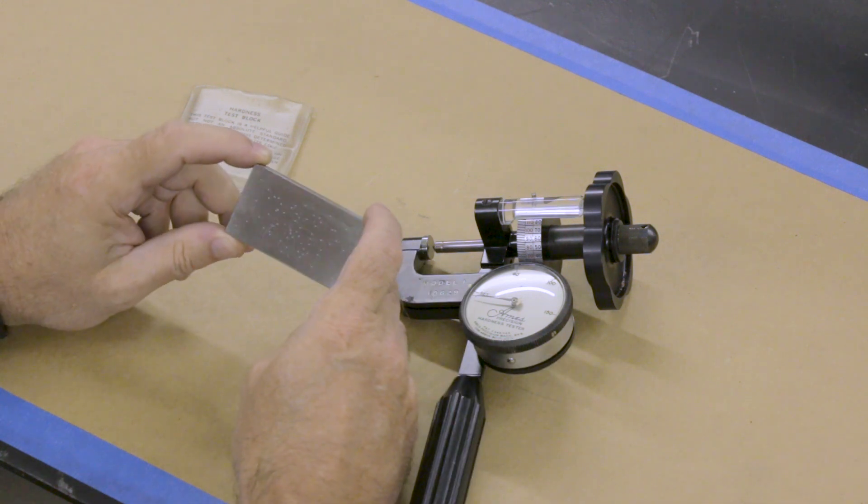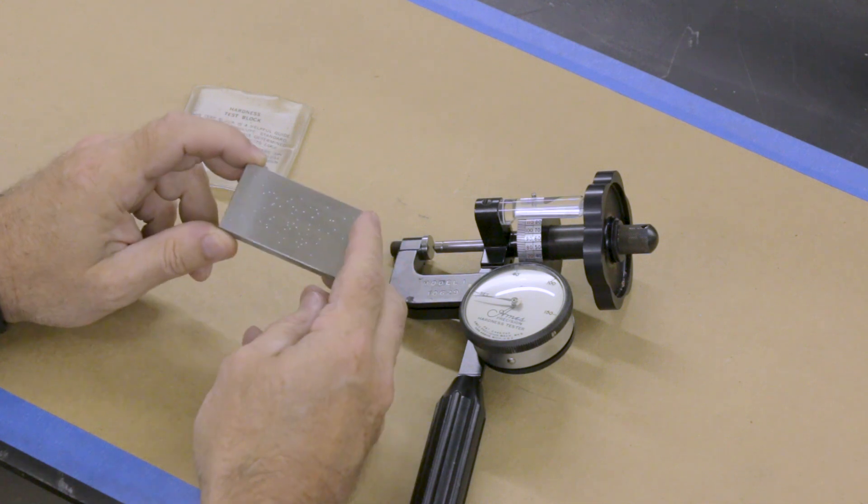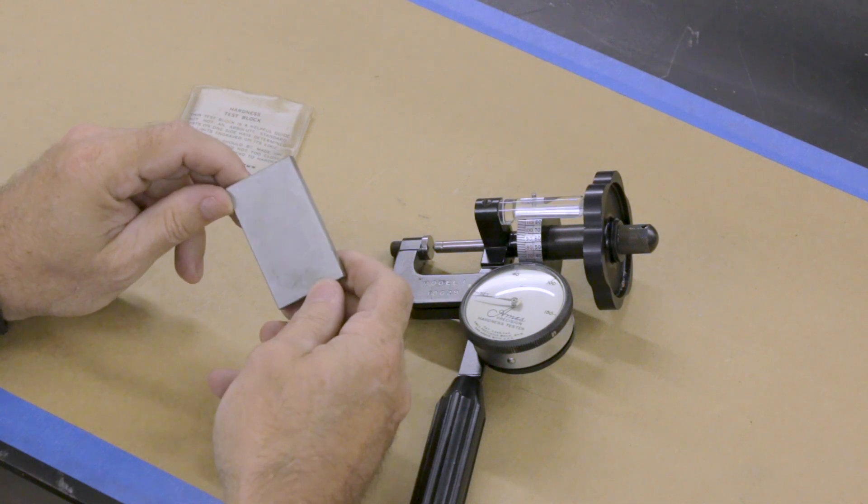One of the things is, with these blocks, you're actually only supposed to test them on one side. And when I got this one, it had dimples, a few dimples on the back side.